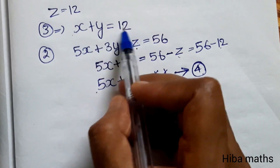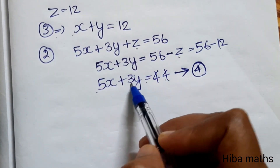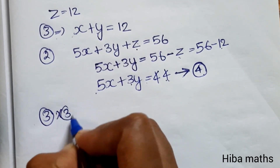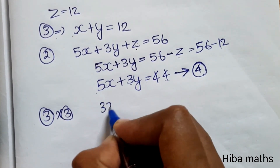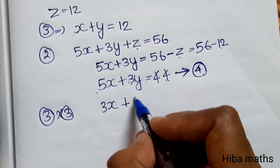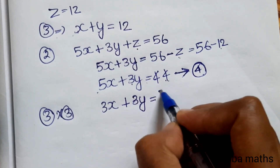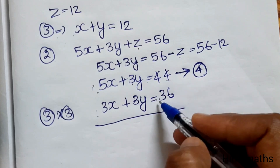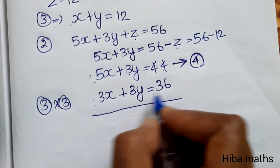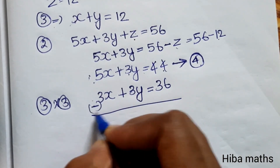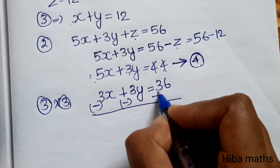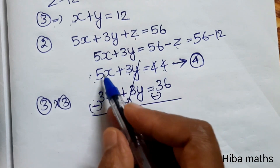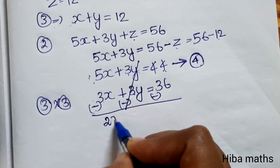Multiply the third equation (x plus y equals 12) by 3, giving 3x plus 3y equals 36. Subtracting this from the fourth equation: 5x plus 3y minus 3x minus 3y, the 3y terms cancel, leaving 2x equals 56 minus 12 minus 36, which equals 8.